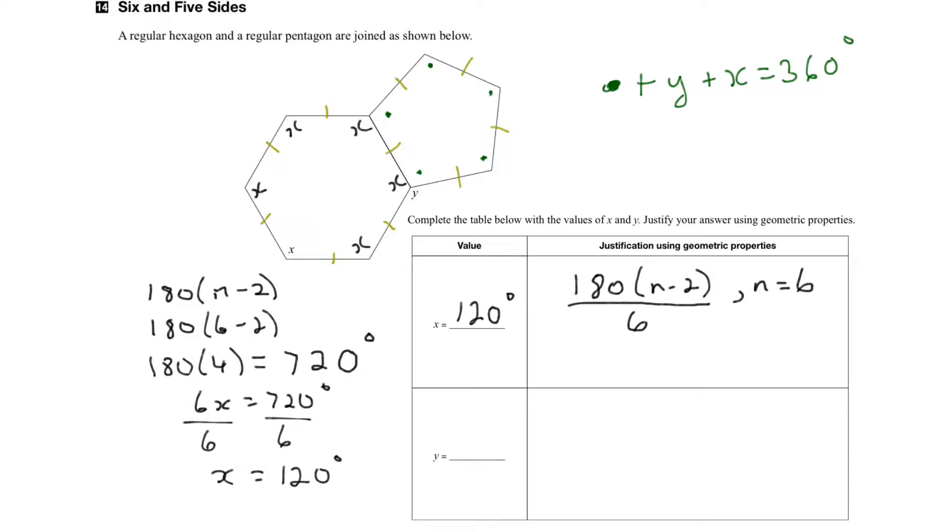So we can say that the dot plus y plus x add up to 360 degrees. Now we already know what x is, that's 120, and I can find the dot because it's an interior angle of this regular pentagon. So we can use the same formula to find its value. But I'm going to show you another way too that we can do it. Let's say that we forgot about the formula, 180 times n minus 2.